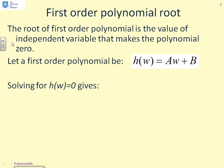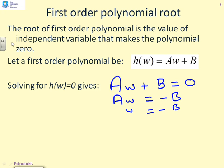If we solve for h(w) equals 0, we end up with Aw plus B equals 0, which gives us Aw equals minus B, or finally w equals minus B over A. So we've solved for the root of the first-order polynomial h(w) equals Aw plus B. The root is at minus B over A.